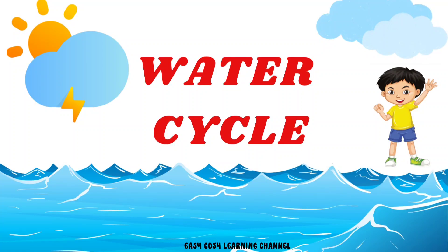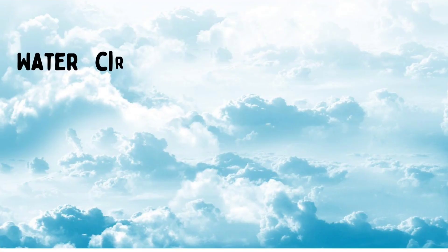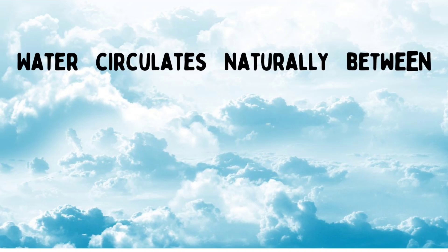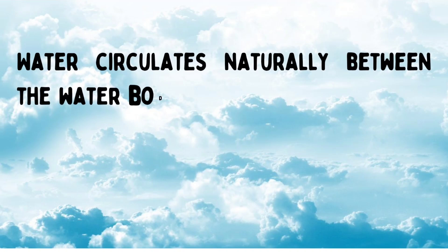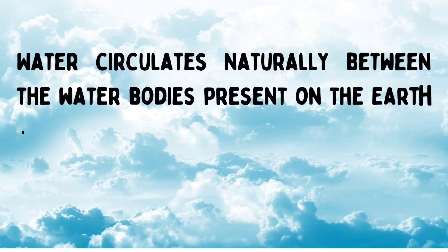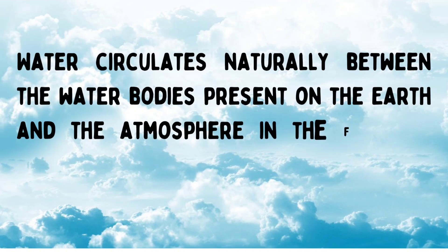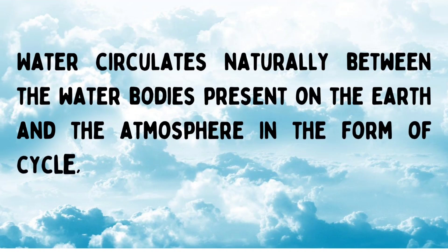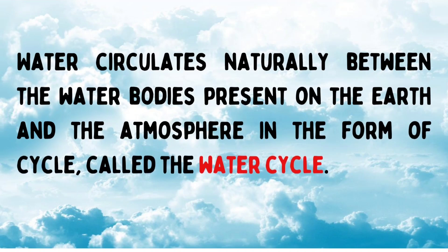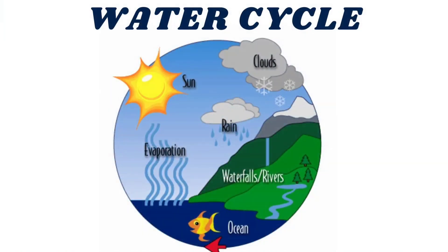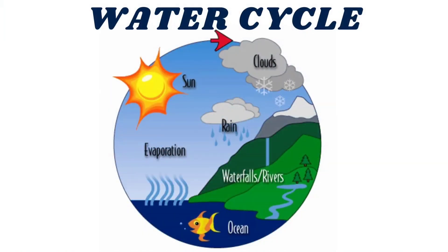Welcome to Easy Cozy Learning Channel. Water circulates naturally between the water bodies present on the earth and the atmosphere in the form of a cycle called the water cycle. See how water circulates.